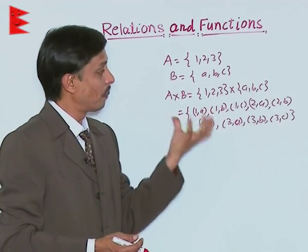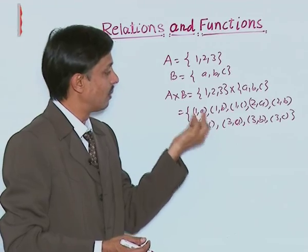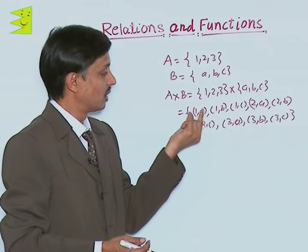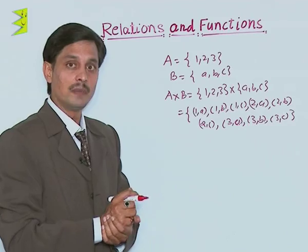So this kind of product is Cartesian and the elements in the form of order pairs are the elements of the Cartesian product.